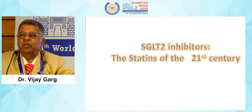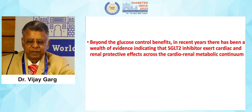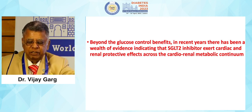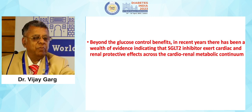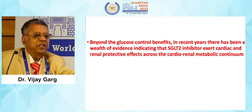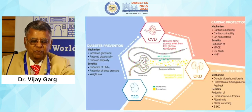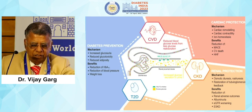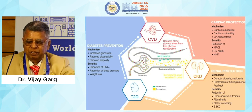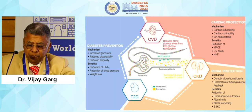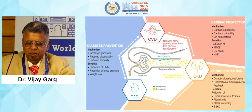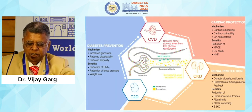SGLT2 inhibitors — the statins of the 21st century. Beyond glucose control, there is now a wealth of evidence that SGLT2 inhibitors exert cardiac and renal protective effects across the cardiorenal metabolic continuum. As we have been hearing over the last two days, diabetes is a cardiometabolic condition. SGLT2 inhibitors offer: diabetes prevention, HbA1c reduction, blood pressure reduction, weight loss, cardiac protection, reduction in MACE, heart failure, renal protection, reduction of renal adverse outcomes, albuminuria, GFR worsening, and end-stage kidney disease.